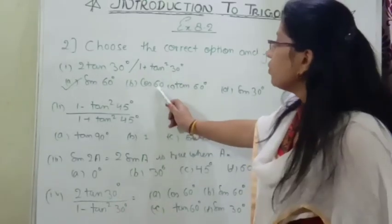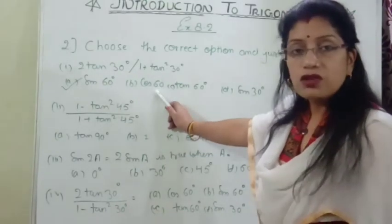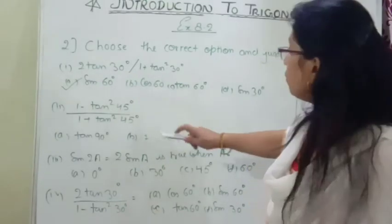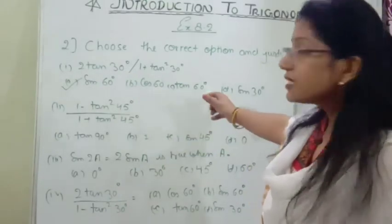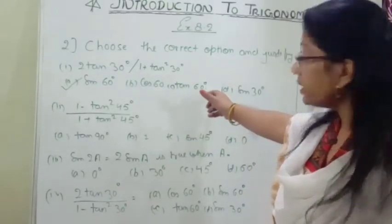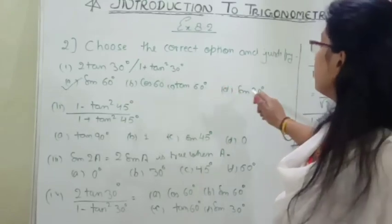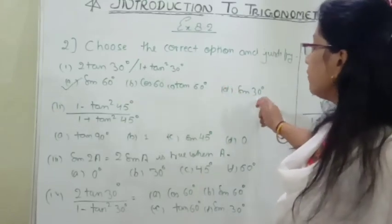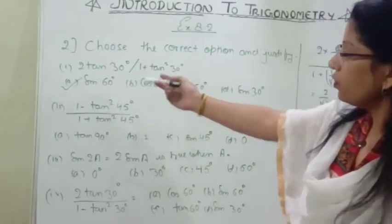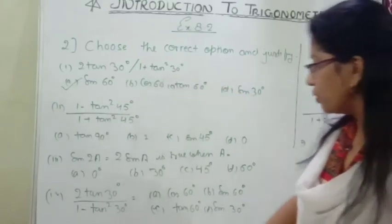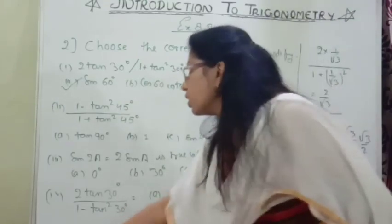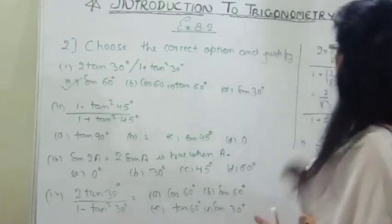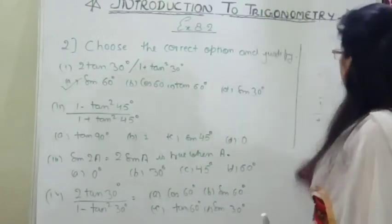Sin 60° = √3/2 is √3/2. And cos 60° value is 1/2, so we got this value. The answer is sin 60°. Now let us start the second part.